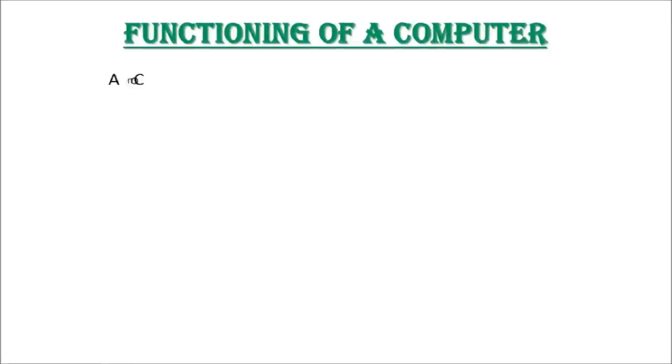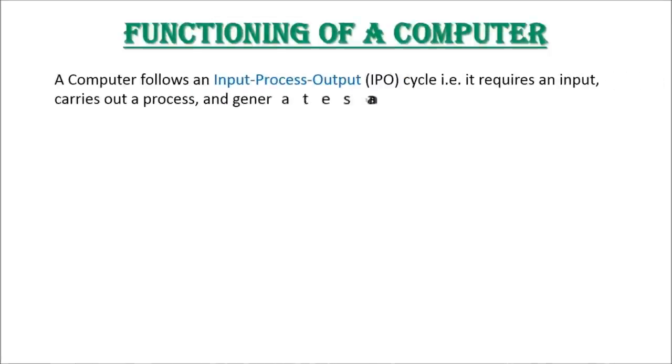Functioning of a computer: A computer follows an input-process-output or IPO cycle. That is, it requires an input, carries out a process, and generates an output.